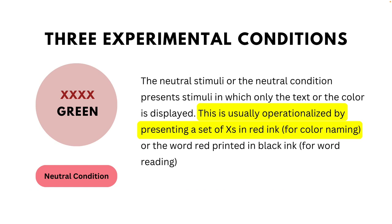The neutral stimuli or neutral condition presents a stimulus in which only the text or only the color is displayed. This is usually operationalized by presenting a set of X's in red ink, as shown in the schematic, or the word 'red' printed in black ink for word reading.